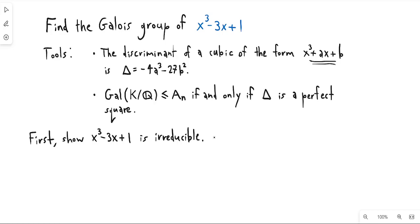This is pretty easy because if this polynomial were reducible over Q, then it would have a rational root. And the rational roots theorem tells us that the only possible rational roots of a polynomial are given by factors of the constant term divided by factors of the highest degree term coefficient.